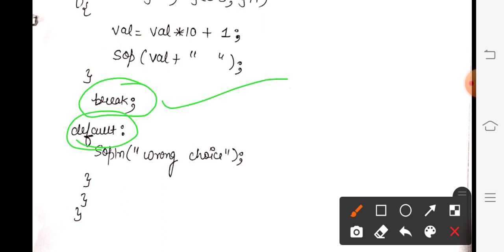Then at last, you always make a default. Default hum isliye banaate hain, because if any choice does not match, it will go to default and will print 'wrong choice'. Then your switch close, main close, class close. Right.